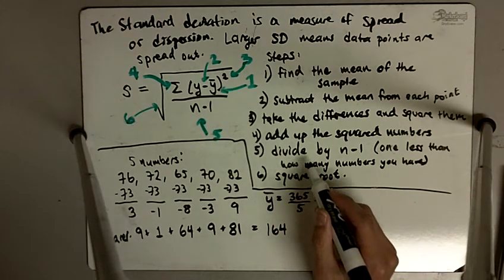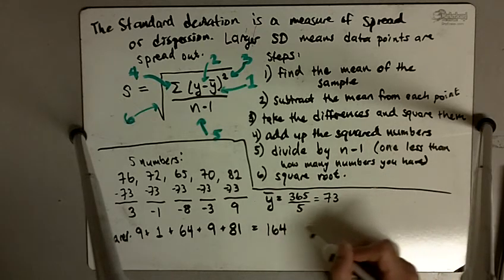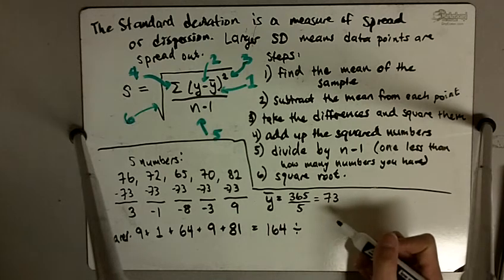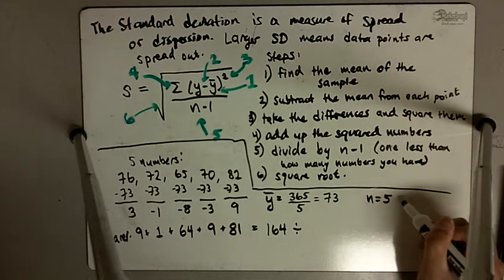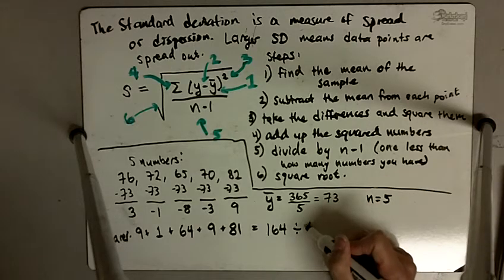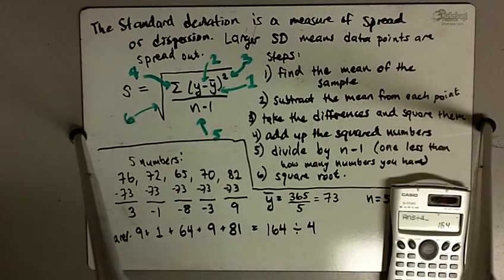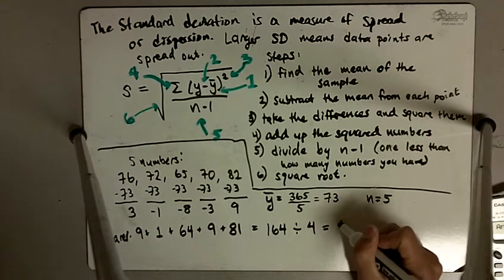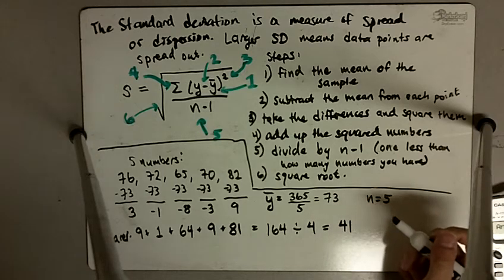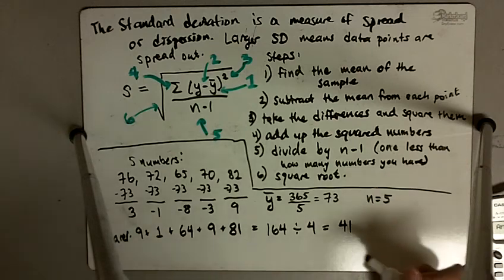Step 5 is after I've added up the squared numbers, I divide by n minus 1. So I do 164 divided by n minus 1. I have 5 numbers, so n is equal to 5. That means n minus 1 is going to be 4. So 164 divided by 4 is equal to 41.